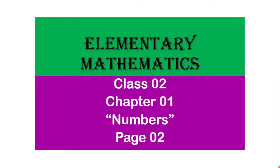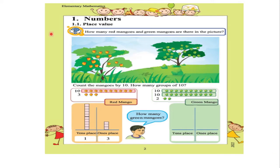Welcome to this tutorial. We will look at elementary mathematics Class 2, Chapter 1, which is called 'Numbers.' We will discuss page number 2. You already know numbers from childhood — 1, 2, 3, 4, 5, 6 — but as a Class 2 student you should now learn about place value, which is what page number 2 will teach you.